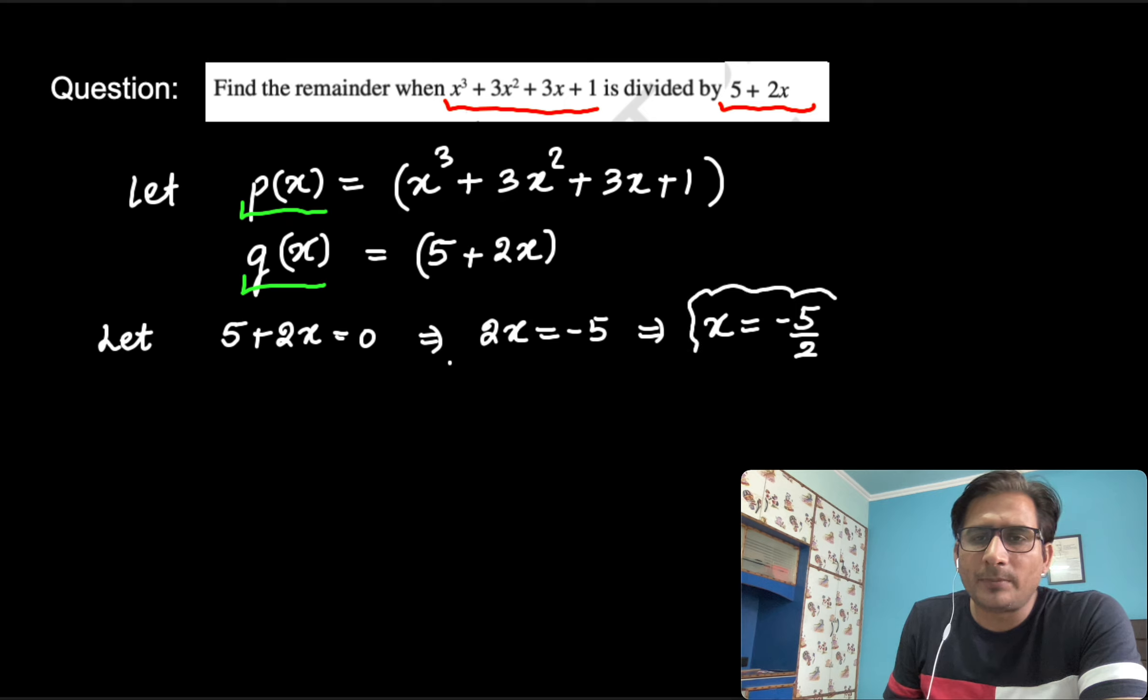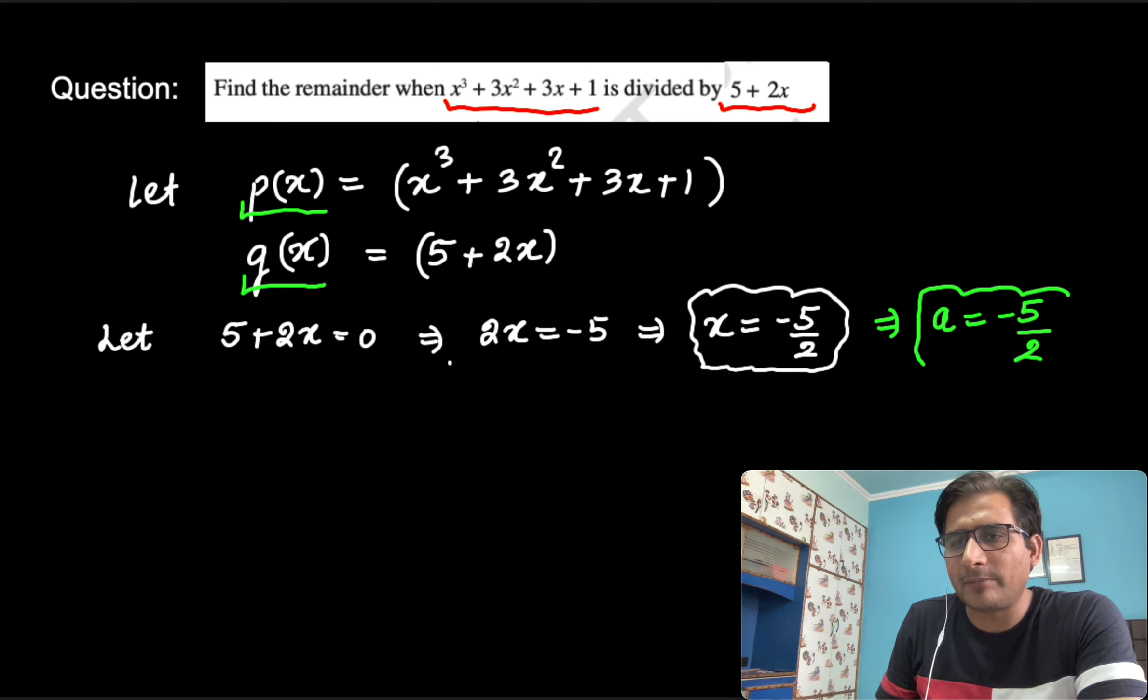The value obtained by taking the g(x) equal to 0 is the value of a. This is the process to find out the value of a. The value of a in this case is 5 by 2.